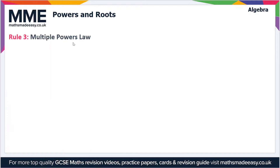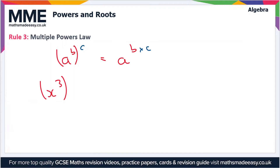Moving on, let's have a look at the multiple powers law. This is where we have a to the b to the power c, which is going to be equal to a to the power b times c. For example, x cubed all squared is going to be equal to x to the three times two, which is equal to x to the power six.